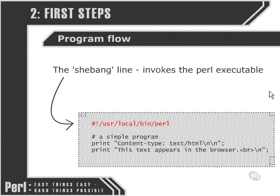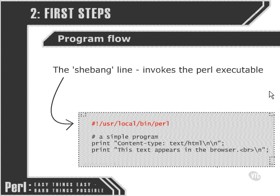We also looked briefly at how important it is to use the so-called shebang line, which invokes the Perl executable and tells the operating system that this is our Perl script and should be treated as such. As we saw in the last chapter, this is not strictly necessary if we're going to be running our scripts on a Windows system.